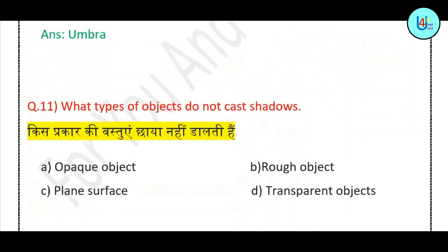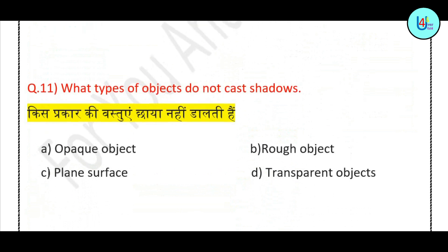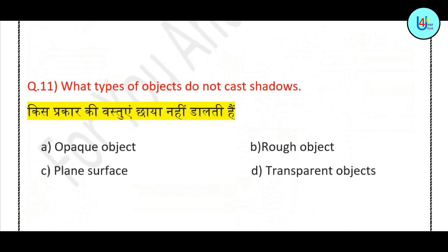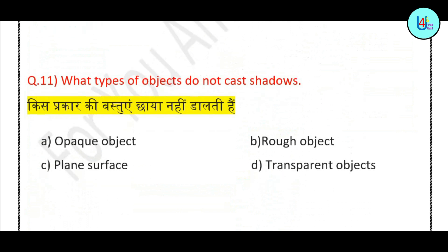Question number 11: What type of objects do not cast shadows? Options are — opaque object, rough object, plain surface, or transparent object. Is the right answer transparent object? Let me know in the comments!